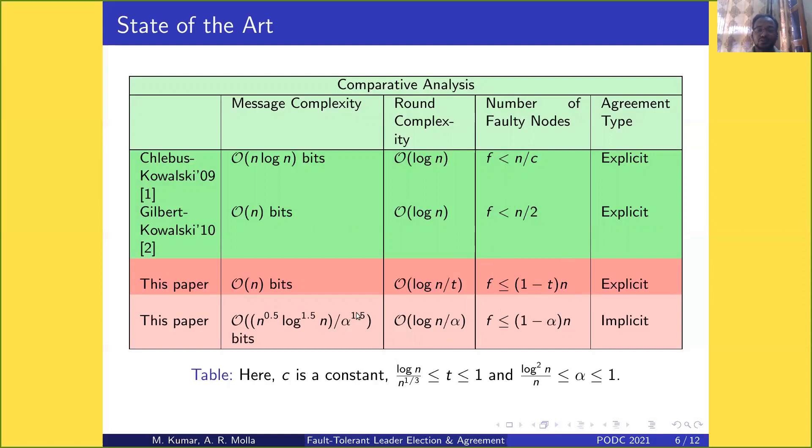For implicit agreement, we have message complexity O(n^0.5 * log^1.5(n) / α^1.5) bits and round complexity O(log(n) / α). Here, α ranges from log²(n)/n to 1, and the number of faulty nodes we can tolerate is close to n.